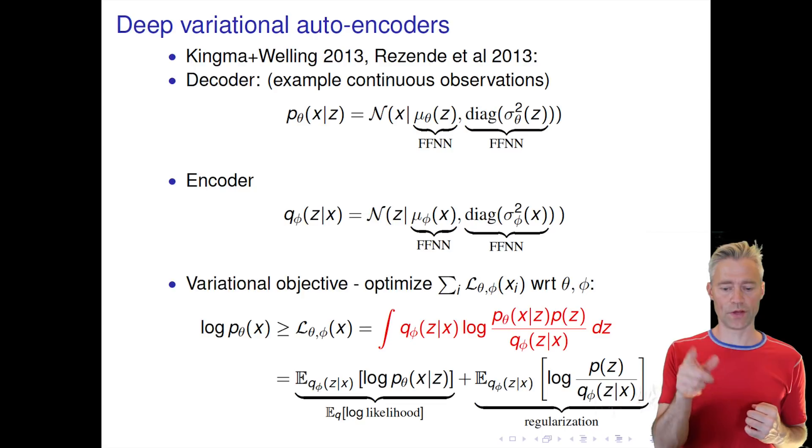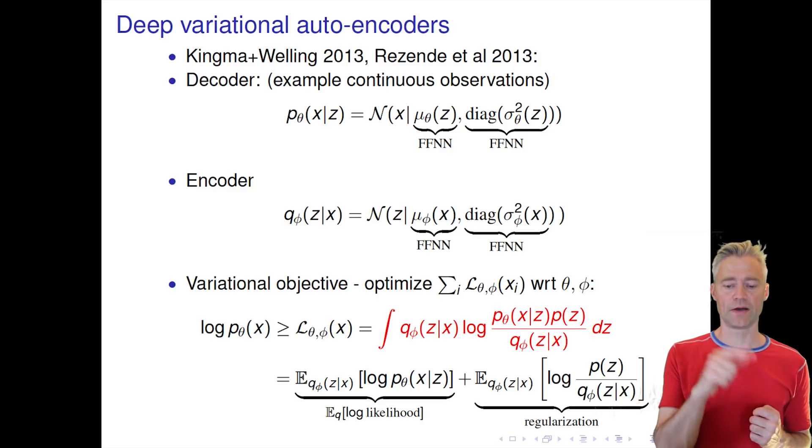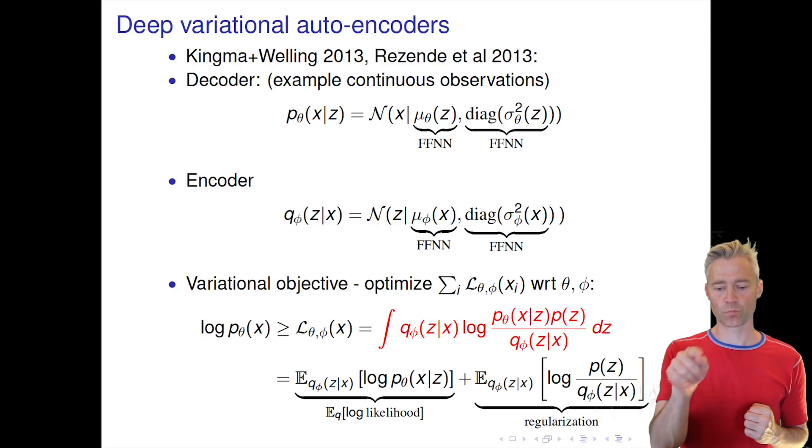You can see it involves an average over the encoder distribution of the log of the joint distribution of x and c from the generative model, divided by this encoder function here.